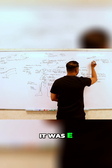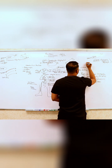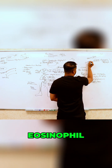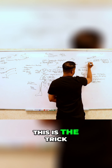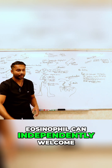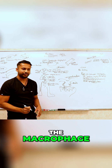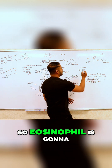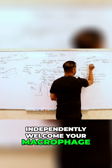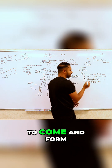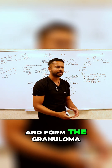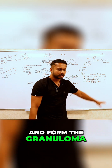It was E — E for eosinophil. Now this is the trick: eosinophils can independently welcome the macrophage. So eosinophils are going to independently welcome macrophages to come in, form giant cell epithelioid histiocytes, and form the granuloma.